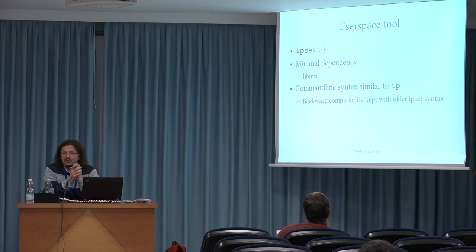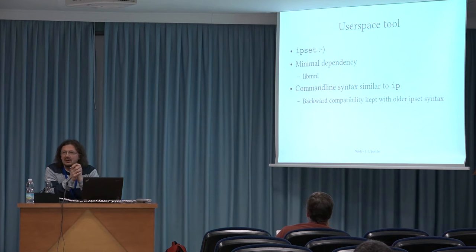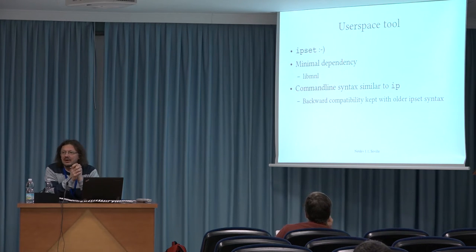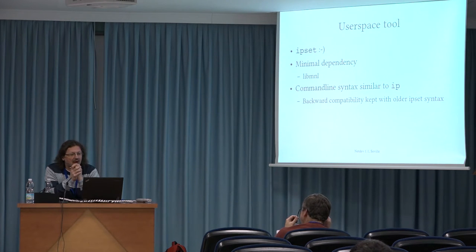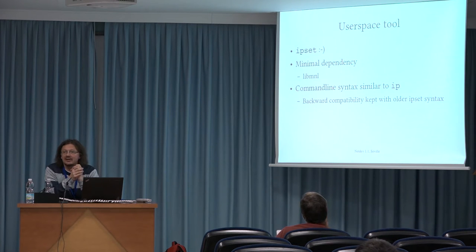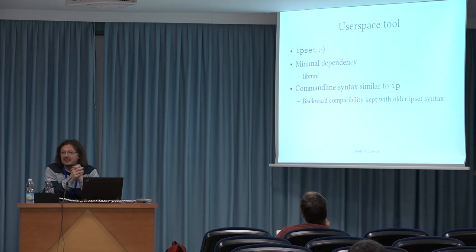We need a user space tool to manage the sets in the kernel — it is called ipset. The binary has a very minimal library dependency on libmnl, which is the minimalistic netlink library written by Pablo. It's a very small, tiny library, so the whole tool is very, very small. The ipset tool starting from version 6.0 has a similar command line syntax to the TC tool, so if you know TC, you are quite familiar with ipset at once. But the original ipset syntax was kept for backward compatibility, so all old syntax can still be used.